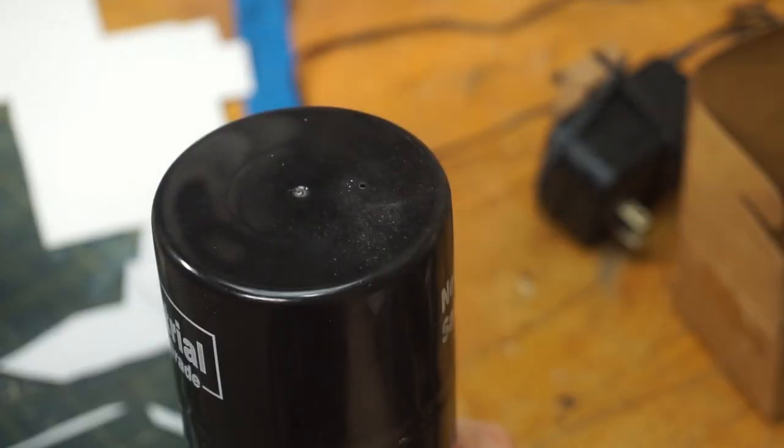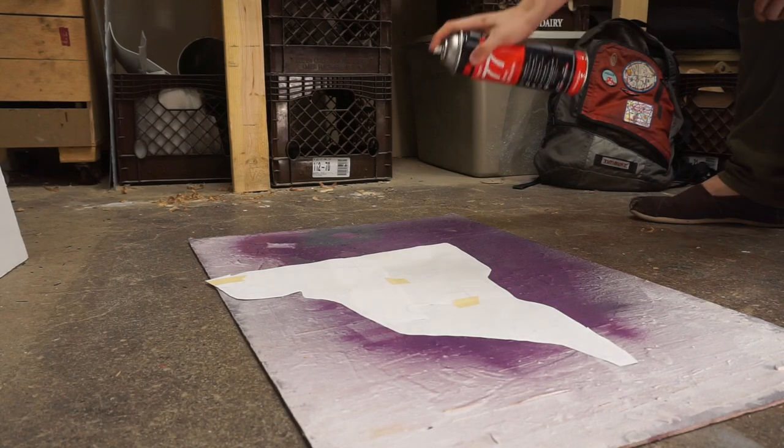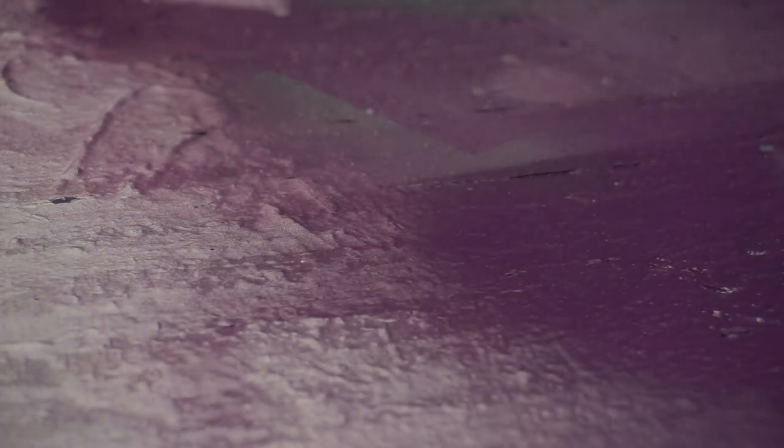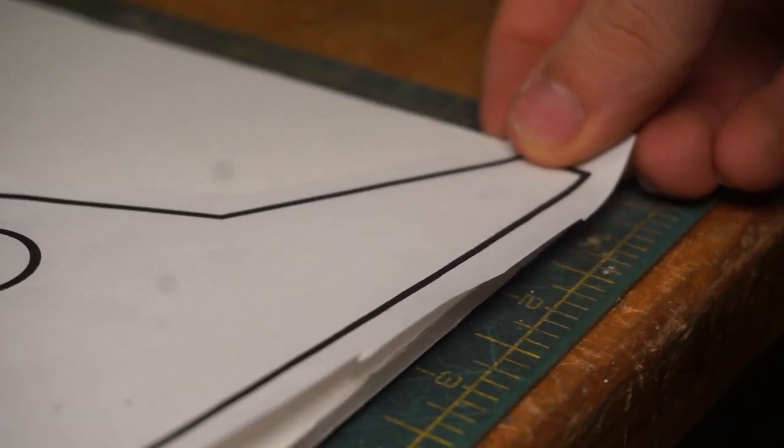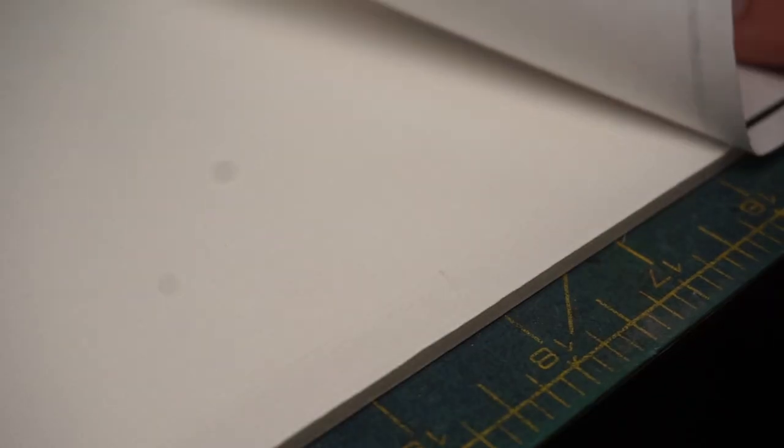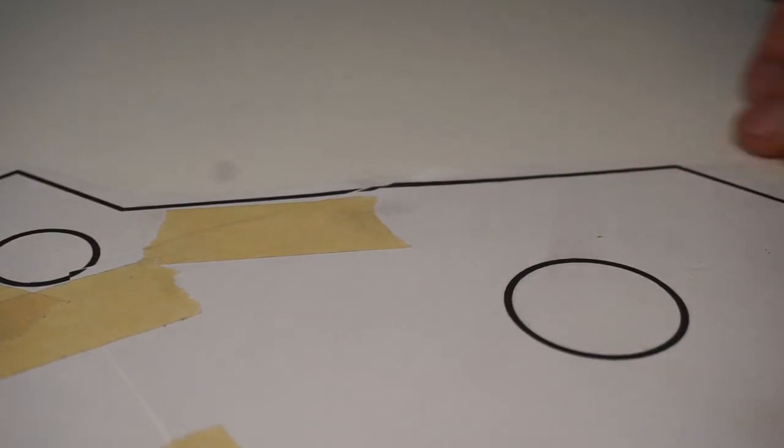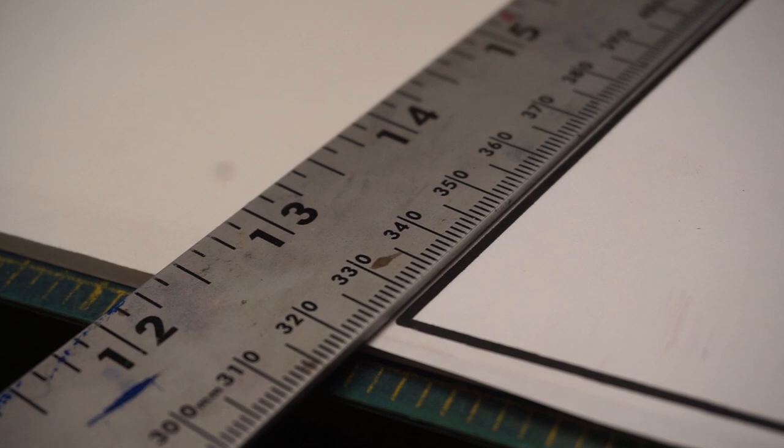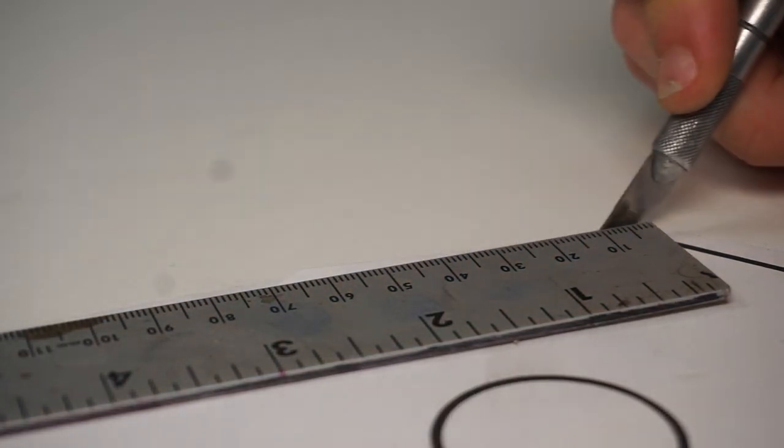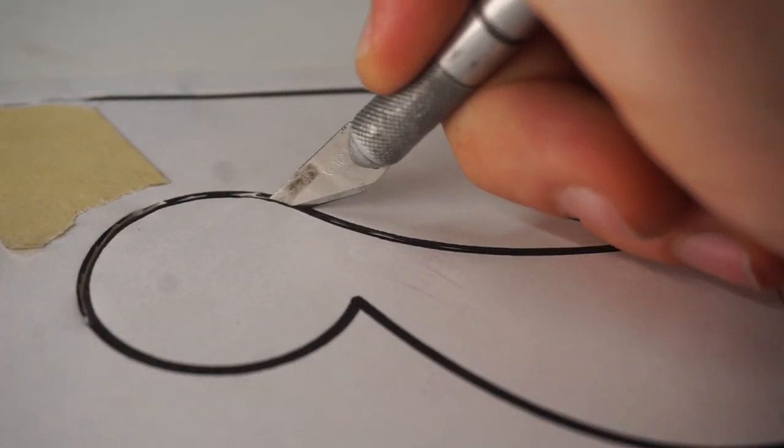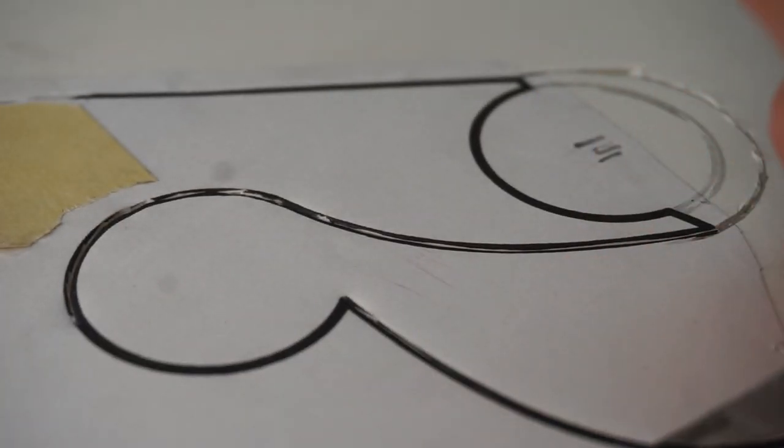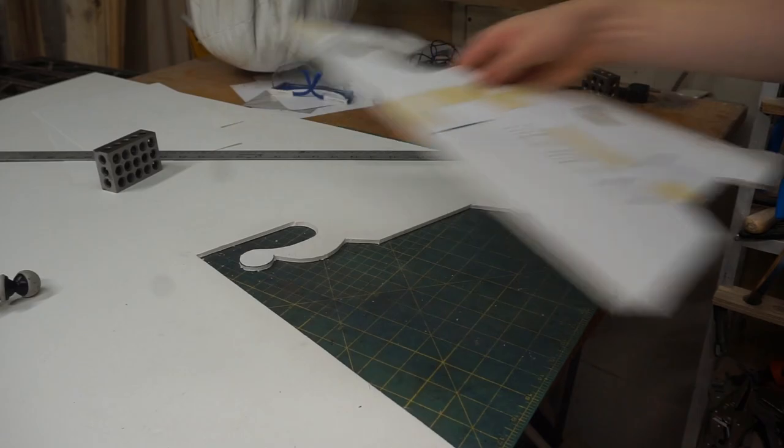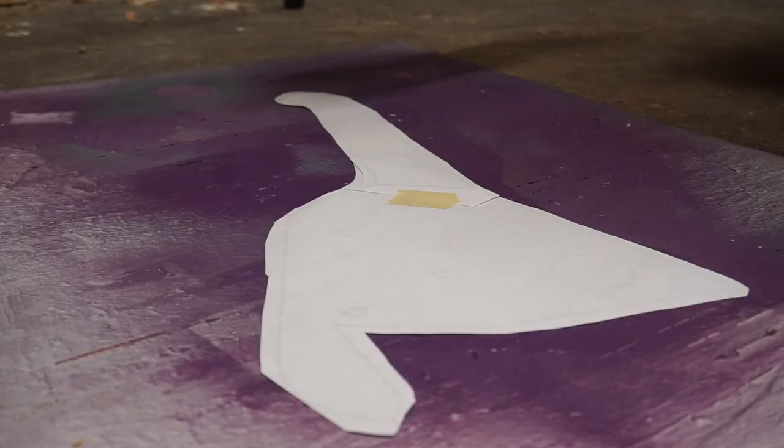To attach each template to the foam core, I'll use spray adhesive. Once attached, I'll cut each out with an exacto knife. And, here's the first finished piece. Now, I just need to cut out all the rest of them.